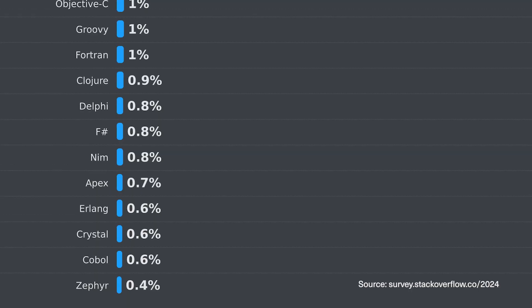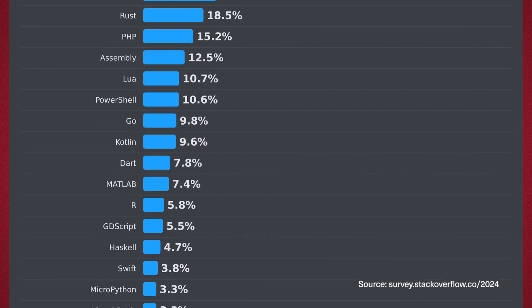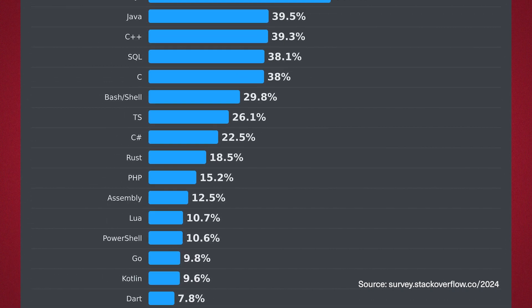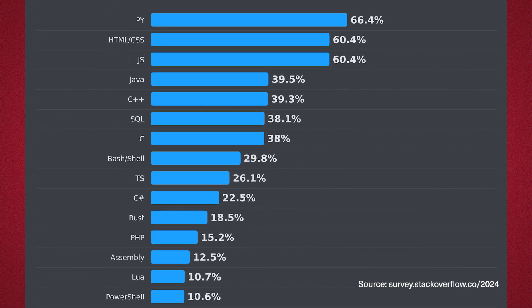When you consider there are 1,500 or more programming languages out there, to have Python at number one, Java at number two or three these days, and then a semi-language down around number eight or nine — that's pretty remarkable.